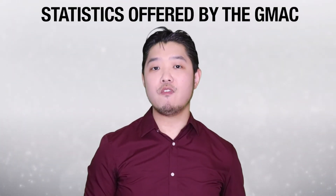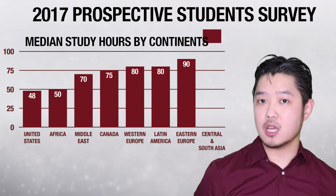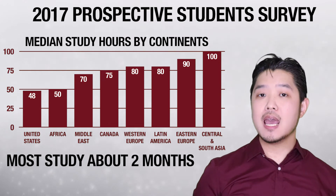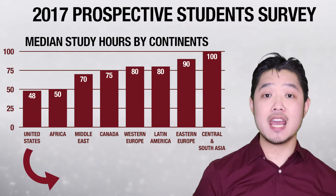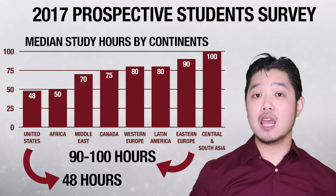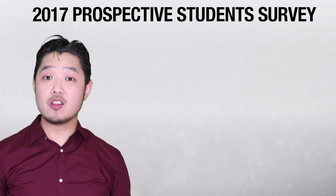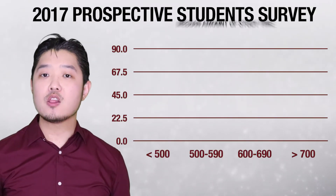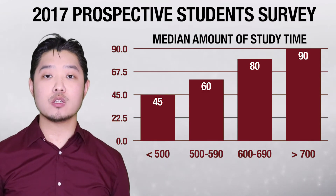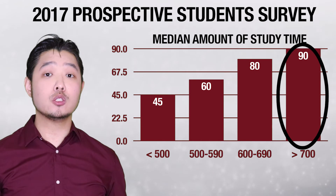Now let us look at the statistics provided by the GMAT. According to the 2017 Prospective Student Survey, the median study hours for each continent are as follows. Please note that this is the median, not the average — median means the middle number. Most countries study for the GMAT for about 2 months. Notably, while the median study hours for the United States is around 40 hours, European and Asian countries tend to have double the amount — around 90 to 100 study hours. This indicates that for most people whose first language is not English, it takes more time to study the verbal part.